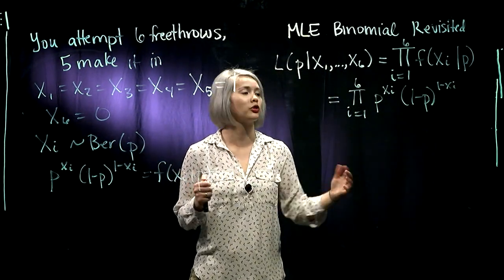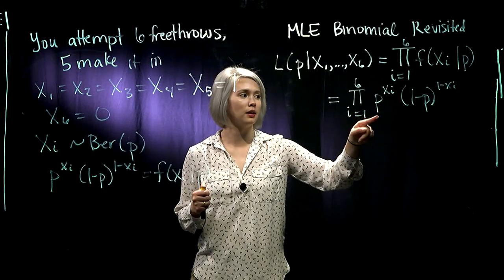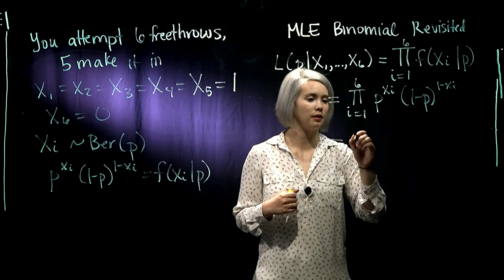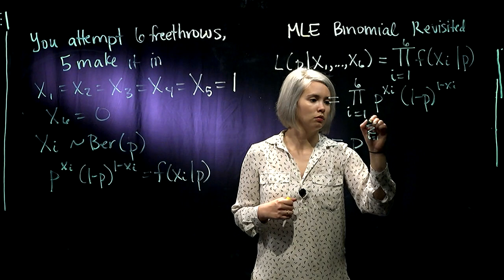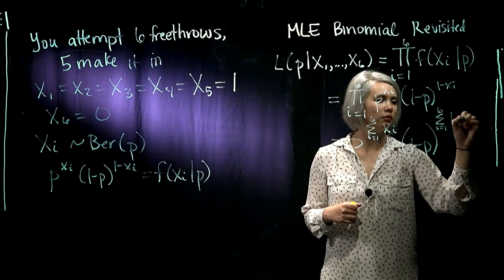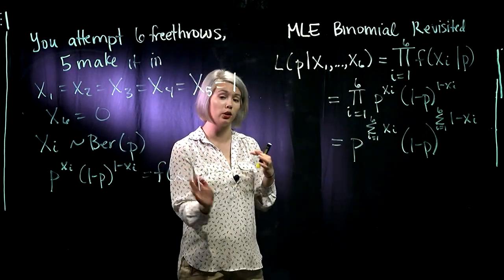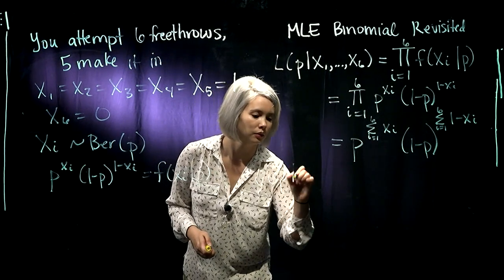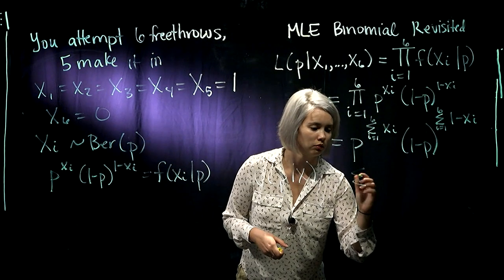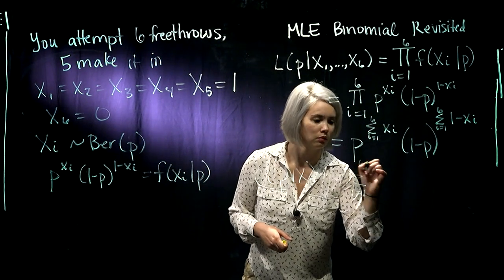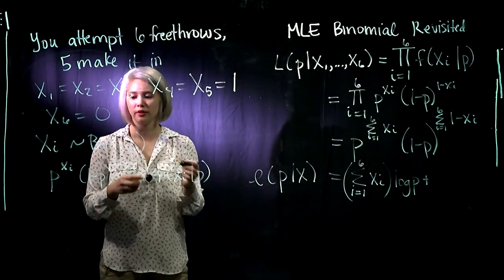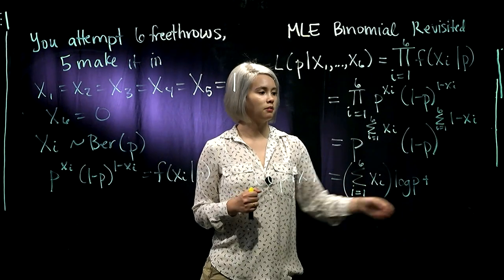We know some things about exponents: if we have the product of p to the xi, that's the same thing as p to the sum of the xi. And then 1 minus p to the sum of 1 minus xi. So there's our likelihood. We can now take the log to get our log likelihood. Taking the log, we have the sum of the xi times log p, and then the sum of the 1 minus xi times log of 1 minus p.